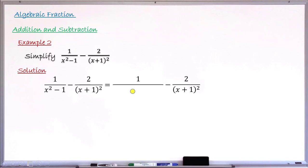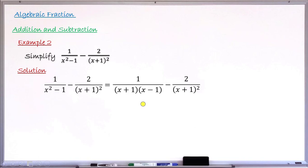For the first denominator: 1 can be written as 1², so x²−1 = x²−1², and applying the difference of two squares gives (x+1)(x−1). The second denominator (x+1)² is just expanded — no further factorization needed. So my factorized denominators are (x+1)(x−1) and (x+1)².